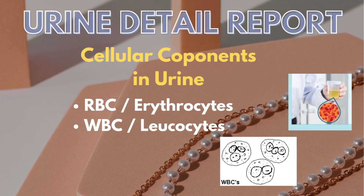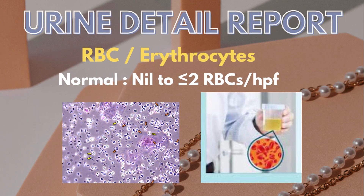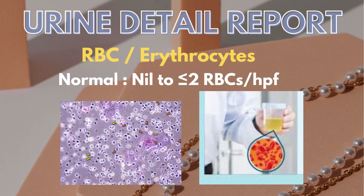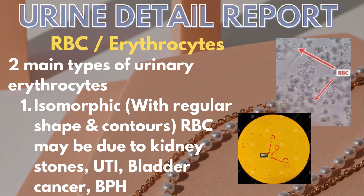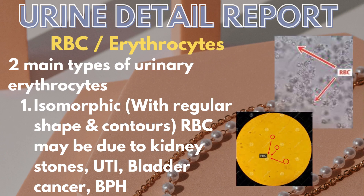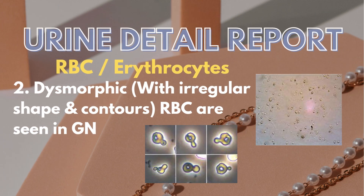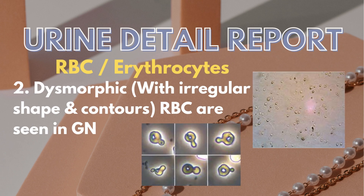Then there are some cellular components in urine DR, like erythrocytes or RBCs, which are normally nil to less than 2 RBCs per high power field. Their presence is significant and for this purpose they are classified in two categories. First is isomorphic, which have regular shape and contour, and may appear in kidney stones, UTI, bladder cancer, or BPH. Second is dysmorphic RBCs, which have an irregular shape and contour, and are seen in glomerulonephritis.